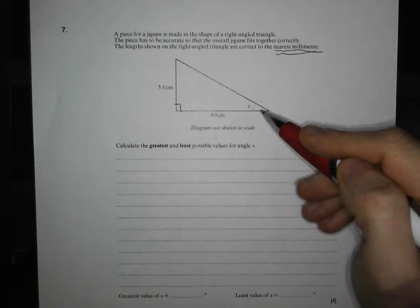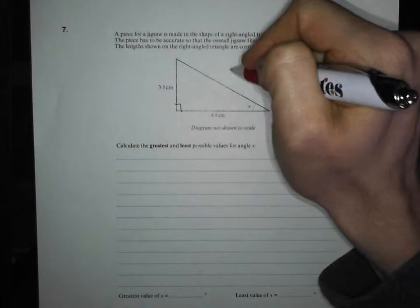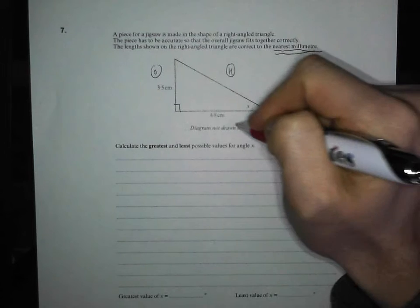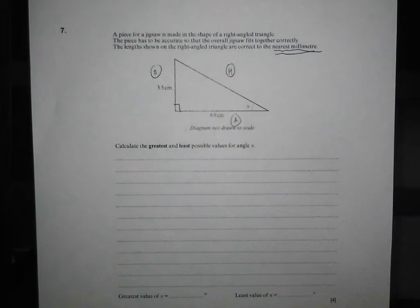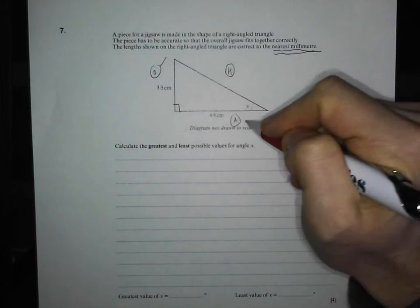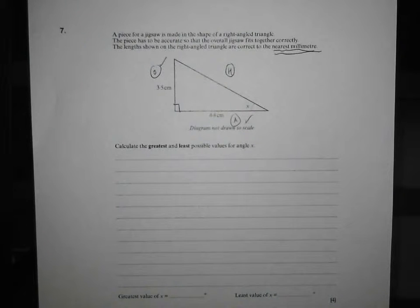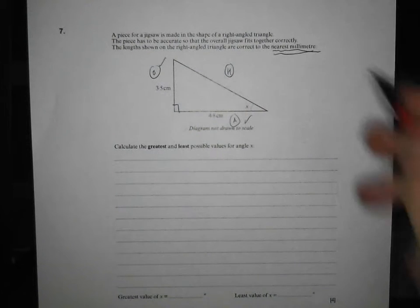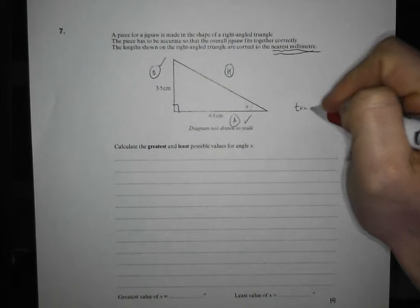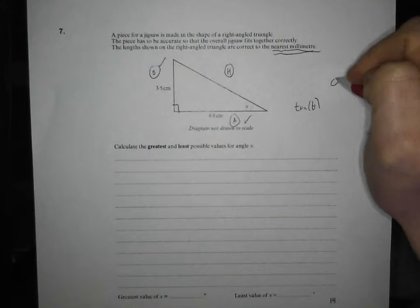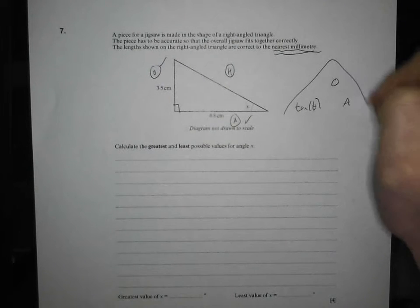So if we want to work out angle x, we've got a hypotenuse, we've got an opposite, we've got an adjacent. Tick what we've got. We've got an O, we've got an A. That tells us if you know your SOHCAHTOA, that's a tan job. So it's going to be tan theta, opposite adjacent. Draw around it.